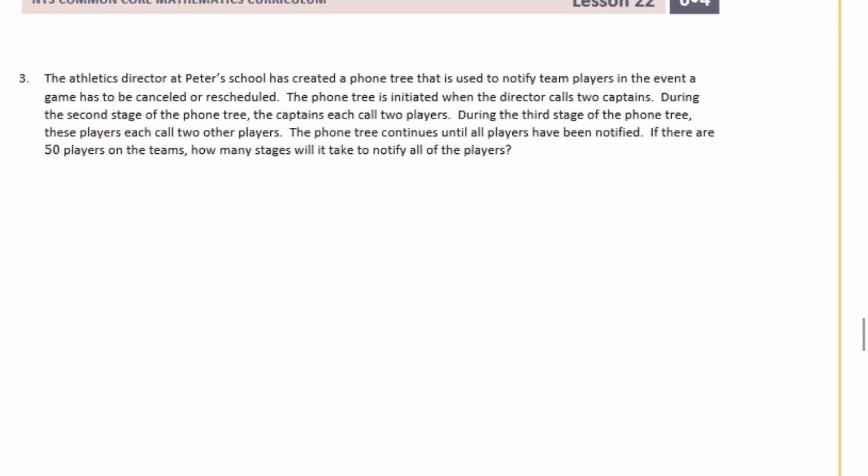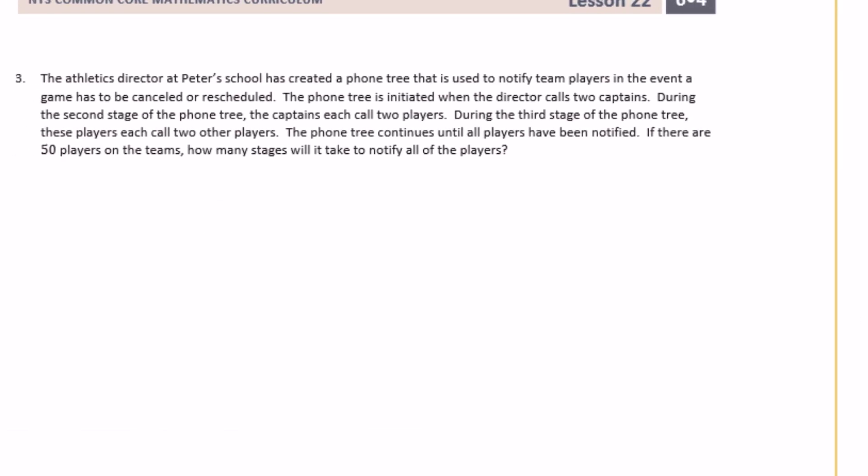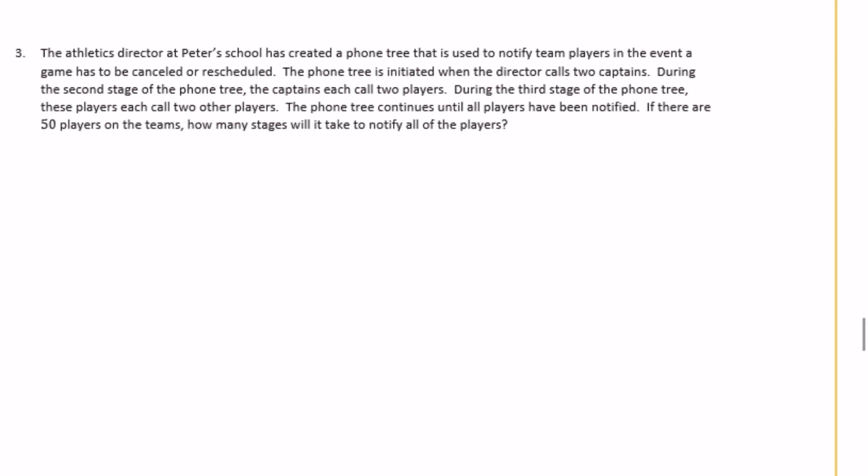Number three: the athletics director at Peter's school has created a phone tree used to notify team players if a game is canceled or rescheduled. The phone tree is initiated when the director calls two captains. In the second stage, each captain calls two players. In the third stage, those players each call two other players. The phone tree continues until all players have been notified. If there are 50 players on the teams, how many stages will it take to notify all the players?